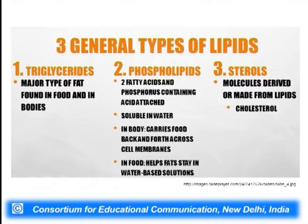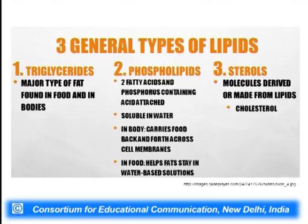Lipids have three major general types. First, triglycerides (triacylglycerols or neutral fats) are the major type of fats stored as energy sources. Second, phospholipids form the lipid bilayer of the cell membrane, acting as very important structural lipids. Third, sterols are derived from lipids — examples include cholesterol and hormones derived from cholesterol. All these types of lipids are important for proper cell functioning.